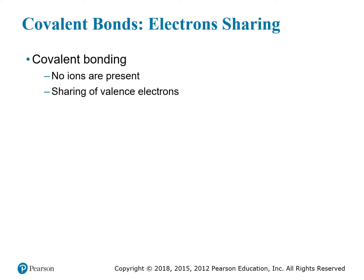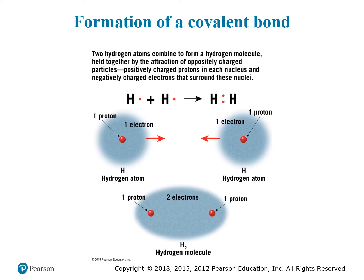Another type of bonding is covalent bonding, where ions aren't present — instead valence electrons are shared. Carbon often forms covalent bonds because it has four electrons in its outer shell and needs eight, so it shares four with another carbon atom. A simpler example: two hydrogen atoms each have one electron, and the first electron shell only needs two, so when they share those two electrons, both fulfill the octet rule, forming the H₂ molecule.